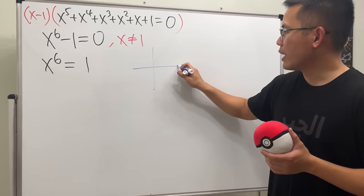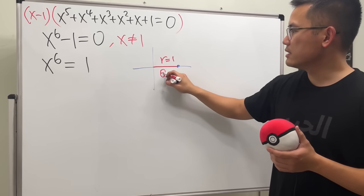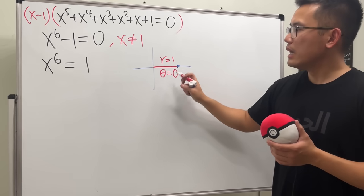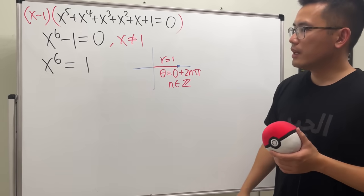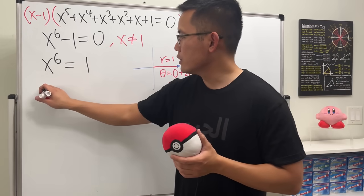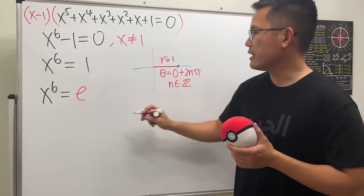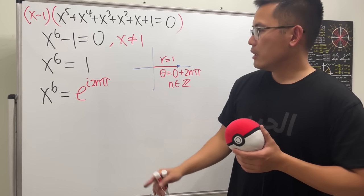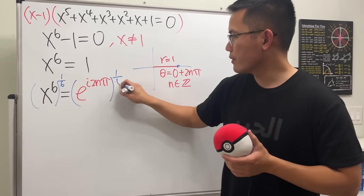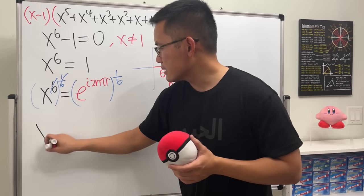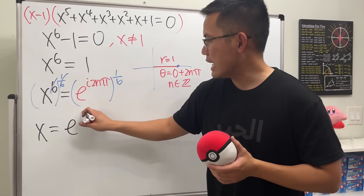To find the sixth roots of one, we take one into the complex plane. In polar form, one has magnitude one and angle zero, but we can add multiples of two pi, so we write x to the sixth equals e to the power of i times two n pi. Taking both sides to the one-sixth power, x equals e to the power of i times n pi over three.